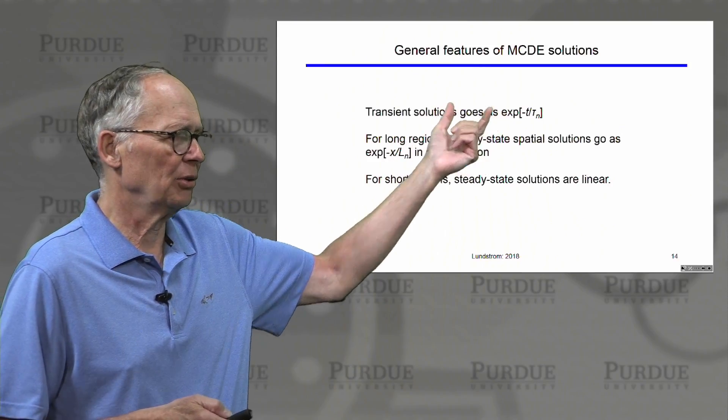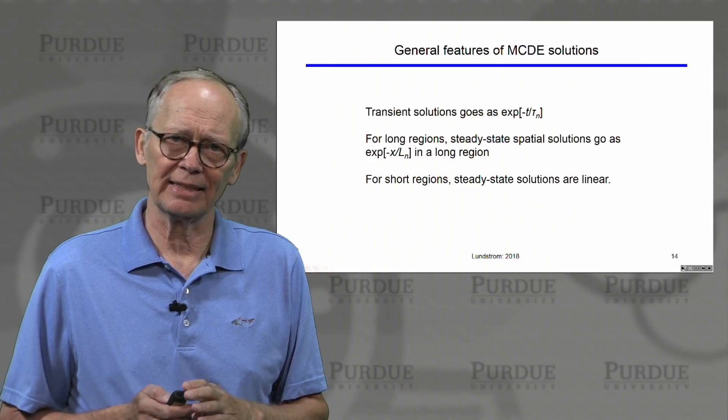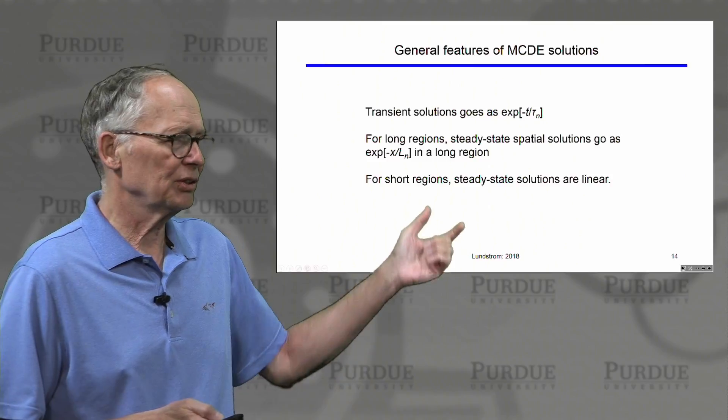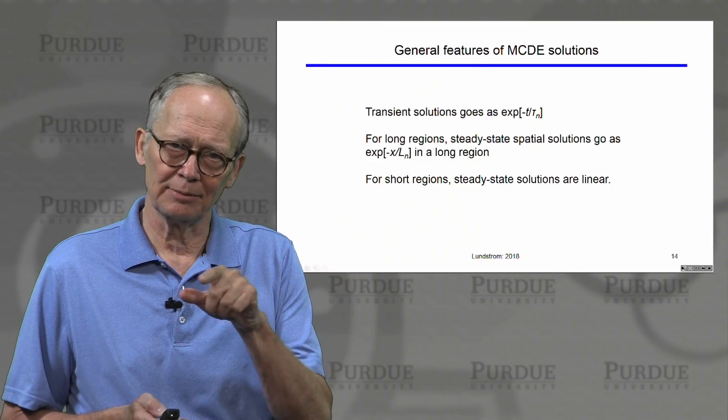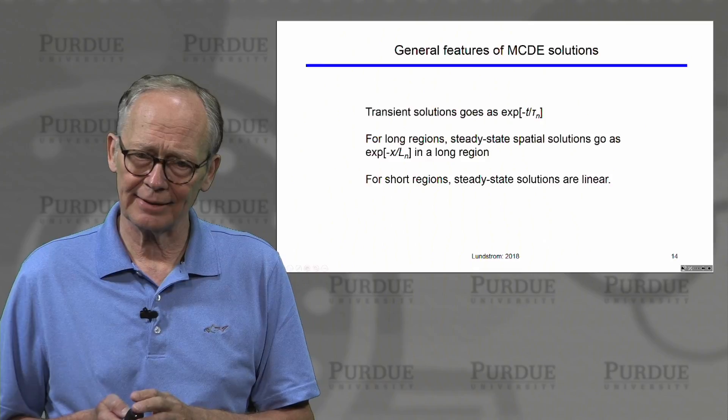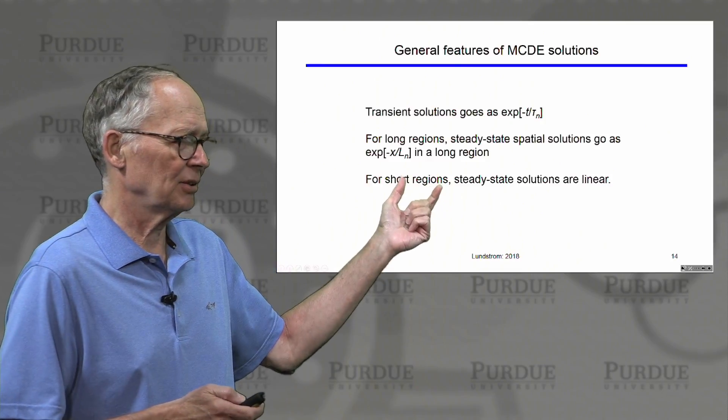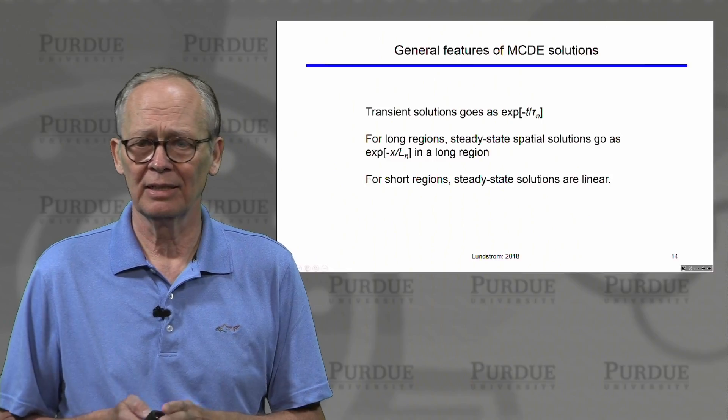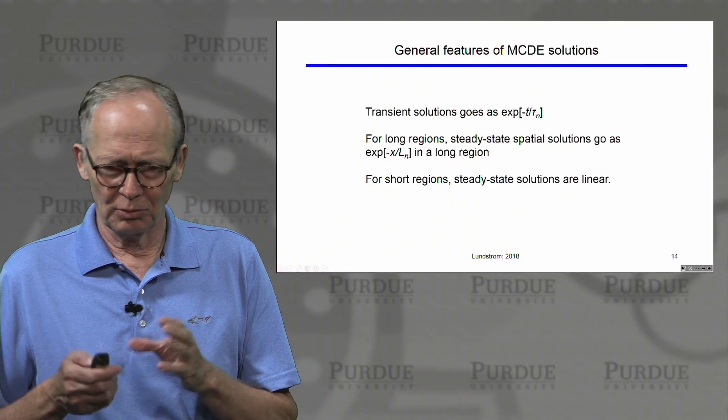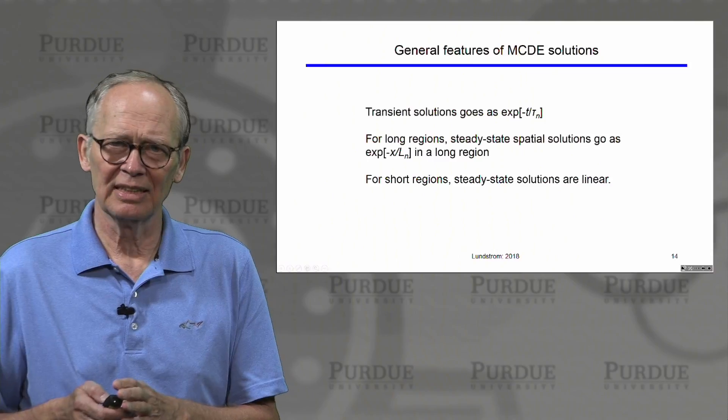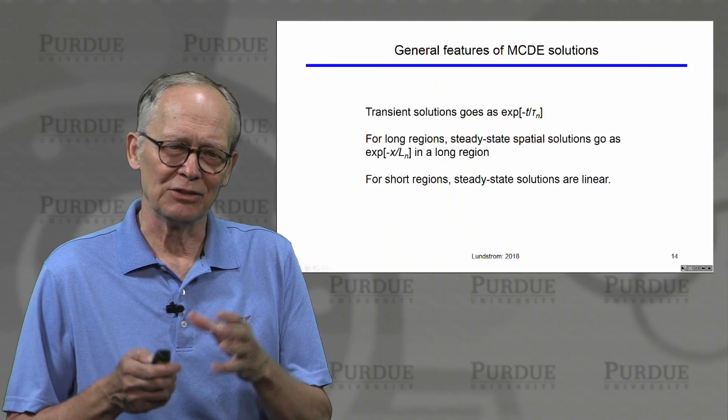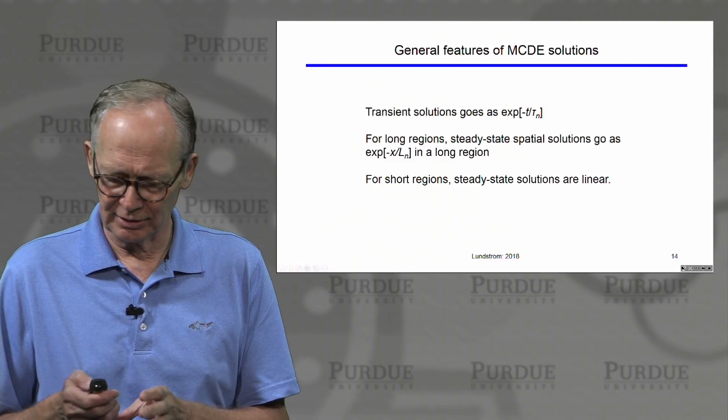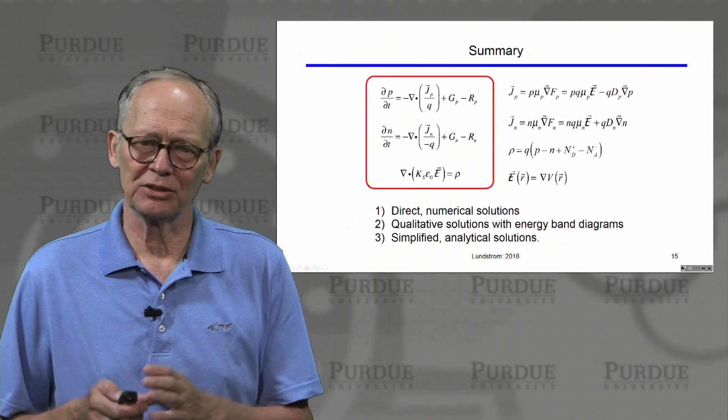Transient solutions go exponentially as e to the minus t over minority carrier lifetime. Steady state solutions in long regions go exponentially as e to the minus x over diffusion length. Steady state solutions in short regions, short compared to a diffusion length, are linear. Understanding these general features allows us to intuit the solution to this minority carrier diffusion equation under situations that we encounter.